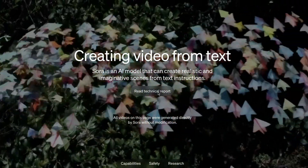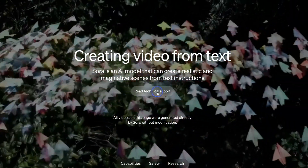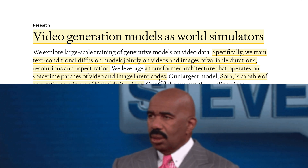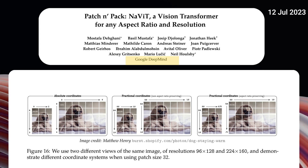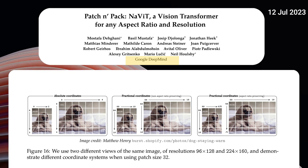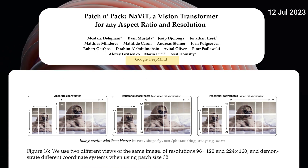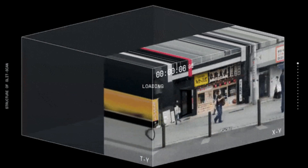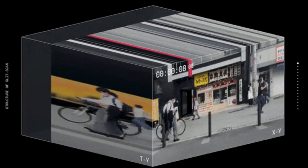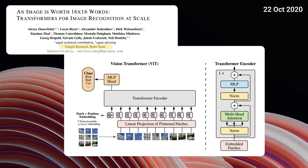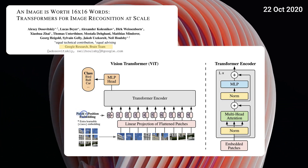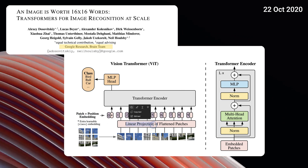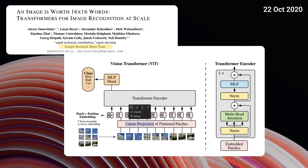So first things first: Sora uses something like spacetime patches of video and image latent codes. Basically, spacetime patches are like tokens for text, so we have patches for video. And patches have previously been shown to be an effective representation for models of visual data.